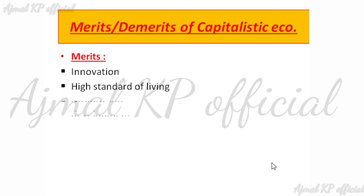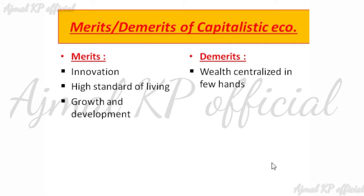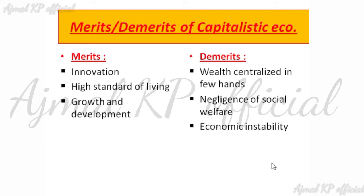And high standard of living — whoever is controlling the property or industries will be living at a high standard. There will be growth and development if people are earning more money. In the field of demerits: wealth is centralized in few hands, negligence of social welfare — the total profit will be controlled by a few people. And economic instability — the poor will be poorer and the rich will be richer. And formation of monopolies — single owners will be dominant.